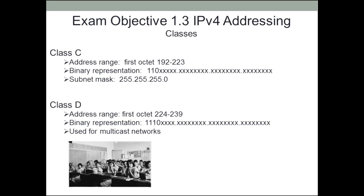Class C: their address range was always 192 to 223. In their binary representation, the first two digits were always 1, and the third digit was always a 0. Their subnet mask was 255.255.255.0. That means there were 2 to the 24th power networks available, and each of those networks had a possibility of 255 hosts — much more useful for smaller networks. A whole bunch of Class C networks were available.